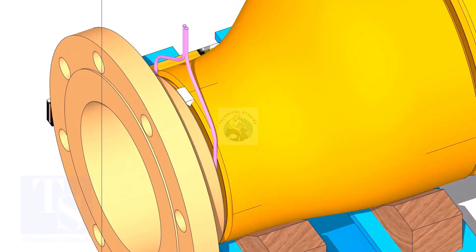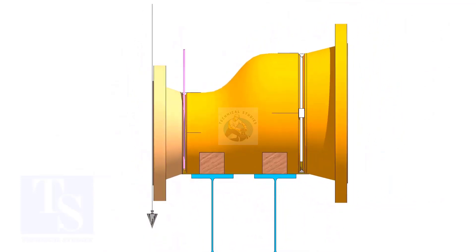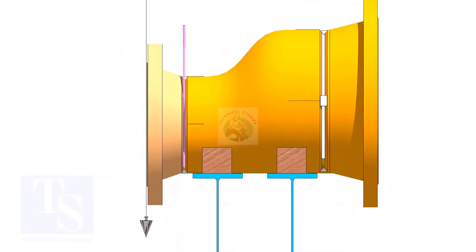Tack weld on the top side. Correct the vertical plumbness and tack weld below.